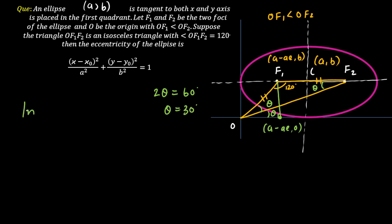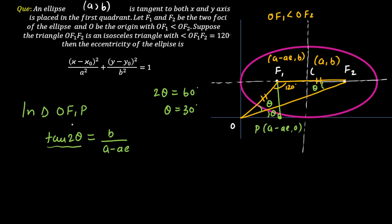Since 120° is one angle of triangle O-F1-F2 and it is isosceles, the remaining two angles are each theta, so 2 theta = 60°, giving theta = 30°. In triangle O-F1-P, applying tan(2 theta): tan(60°) = b / (a minus ae). So tan 60° = √3, and factoring out a gives √3 · a(1 minus e) = b. Squaring both sides: 3a²(1 minus e)² = b².